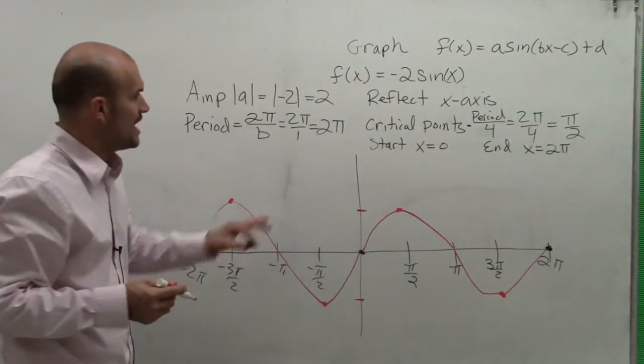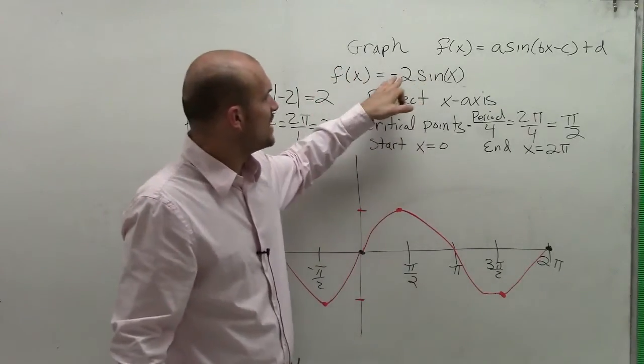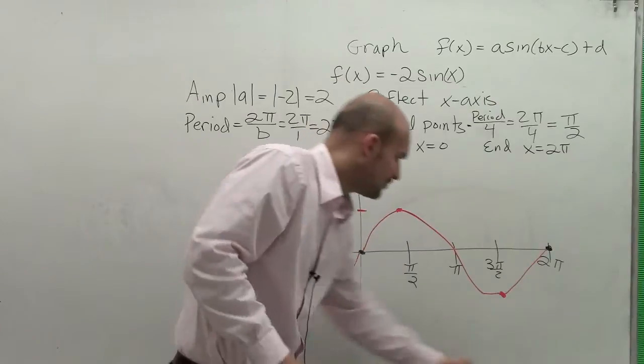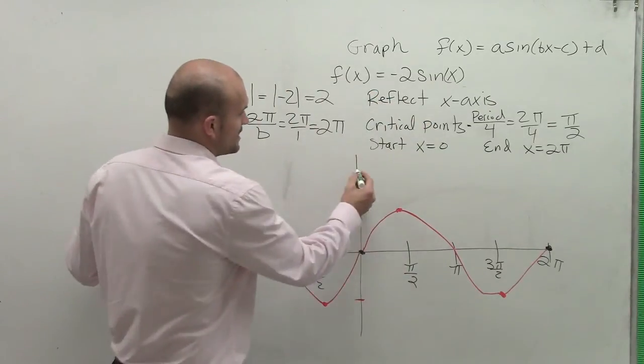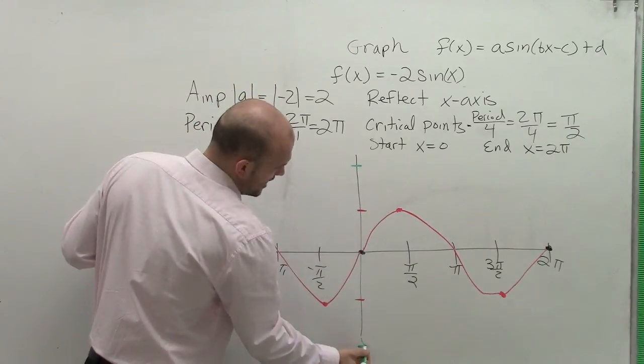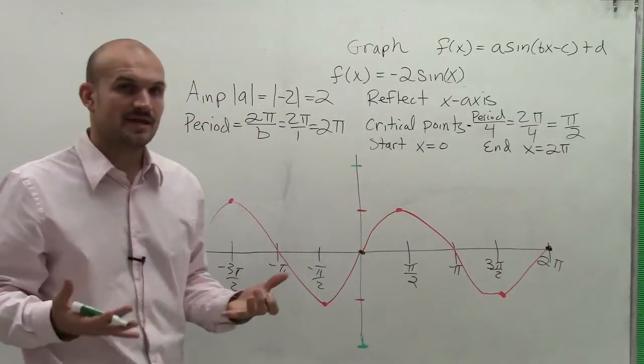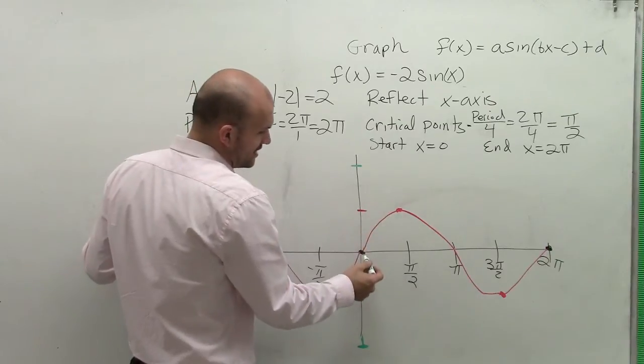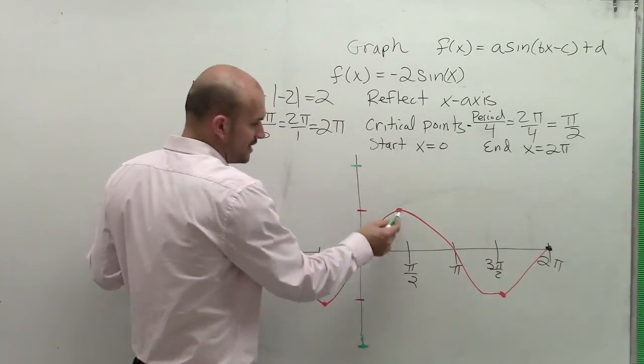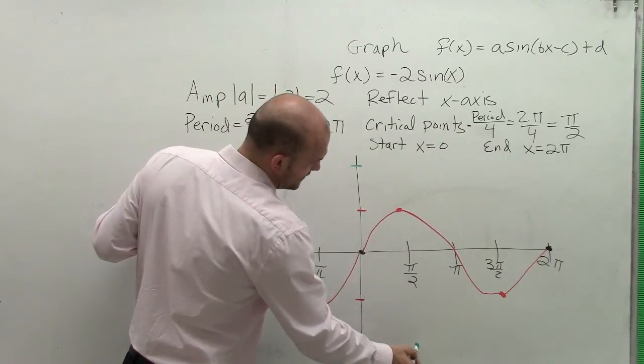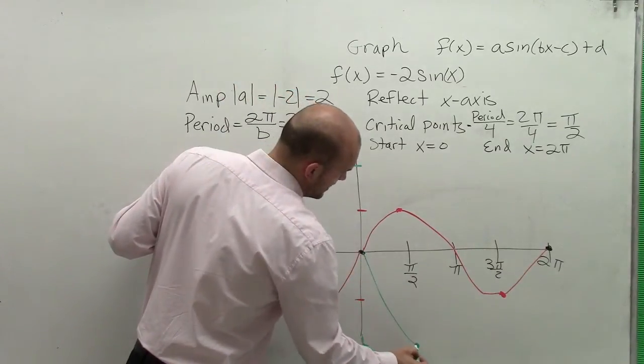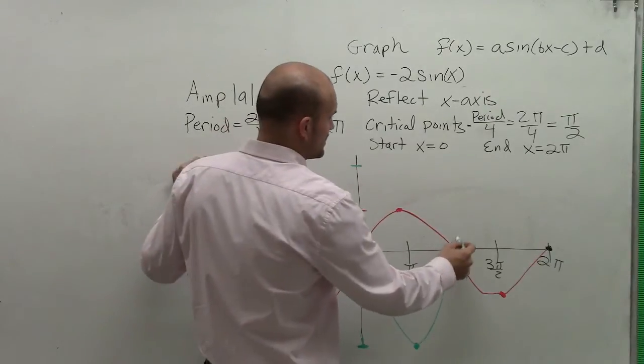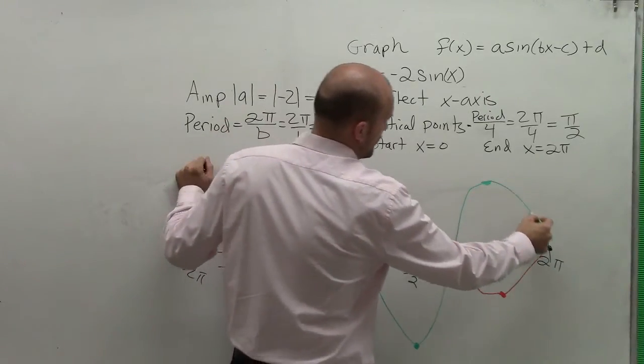So what we notice about our new graph is really the only thing that's different is we have a reflection of the x-axis and we have an amplitude of 2. So therefore, my new graph, rather than going all the way up to 1, is now going to go up to 2 and down to -2. The other thing is we know that now my points, it's all going to be reflected about the x-axis. So instead of the sine graph going up, it's actually initially going to go down. And it's not going to go down to 1, it's going to go down now to -2. So as I go down to -2, it's going to have to rebound back up. And we still said a critical point was at π.